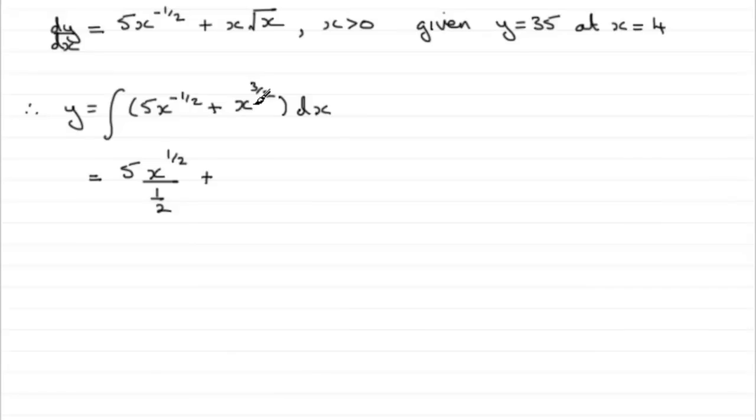For the next term, do much the same kind of thing again. Add 1 to the power. If you add 1 to 1 and a half, you're going to get 2 and a half, or 5 over 2. So that's going to be x to the power 5 over 2, and then divide by the new power, so divide by 5 over 2.